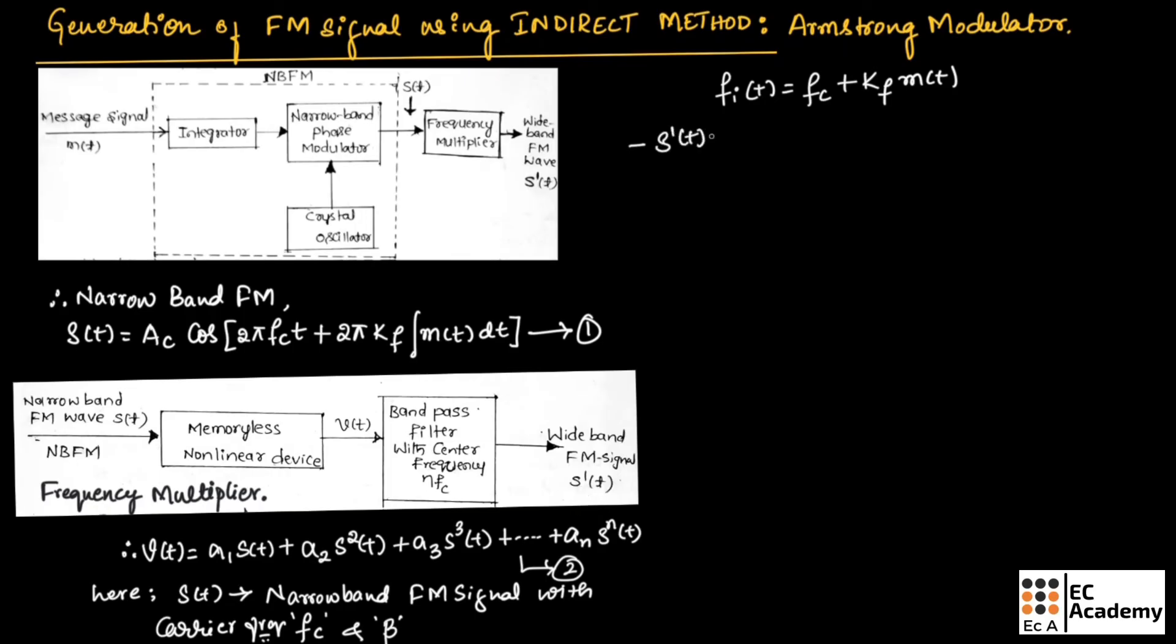Therefore, S', we can write it as Ac cos(2π fc' t + 2π kf' ∫m(t)dt). Let us take this as equation number 3 and this equation number 3 indicates the required wide band FM signal.